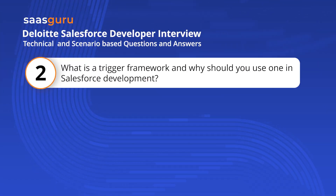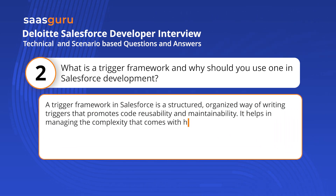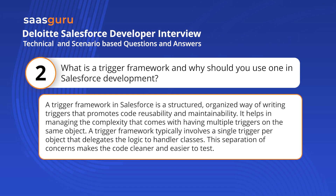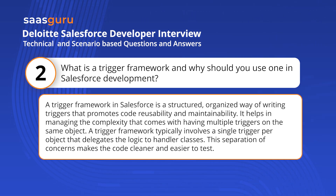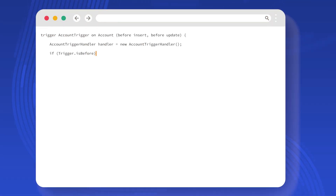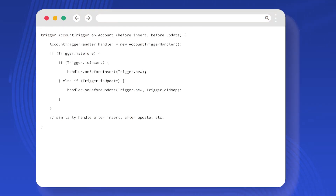What is a trigger framework and why should you use one in Salesforce development? A trigger framework in Salesforce is a structured, organized way of writing triggers that promotes code reusability and maintainability. It helps manage the complexity that comes with having multiple triggers on the same object. A trigger framework typically involves a single trigger per object that delegates logic to handler classes, making the code cleaner and easier to test. Here's a basic example of a trigger framework pattern.